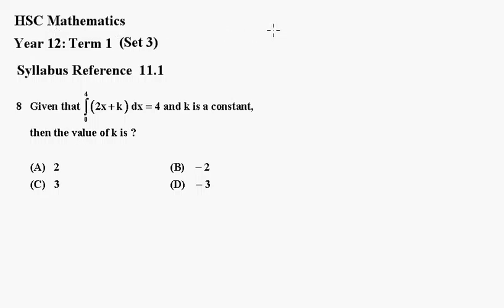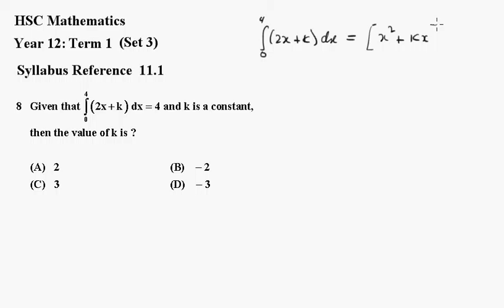We get that the integral becomes x squared plus kx, evaluated between 4 and 0, which equals 16 plus 4k, minus 0.